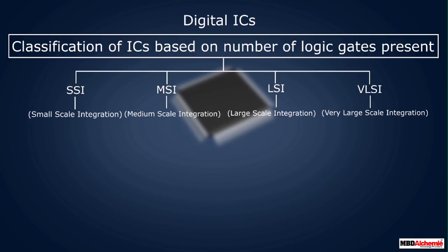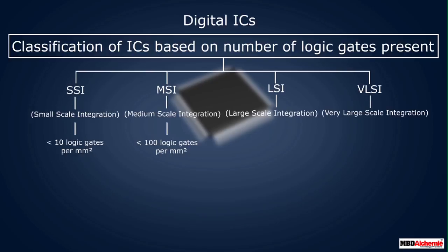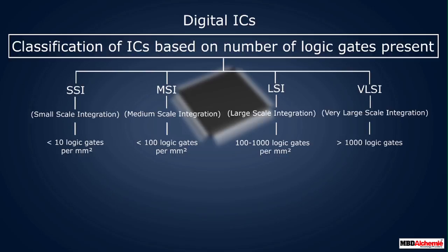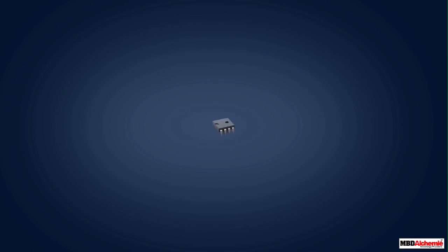SSI — small scale integration — has less than 10 logic gates per square millimeter. MSI — medium scale integration — chips have less than 100 logic gates per square millimeter. LSI — large scale integration — chips have 100 to 1000 logic gates per square millimeter. VLSI — very large-scale integration — chips have more than 1000 logic gates per square millimeter.